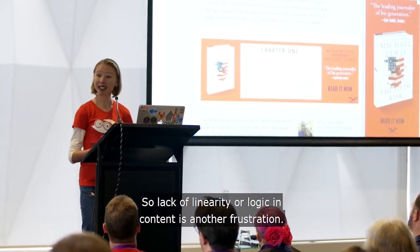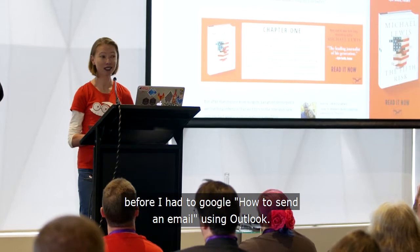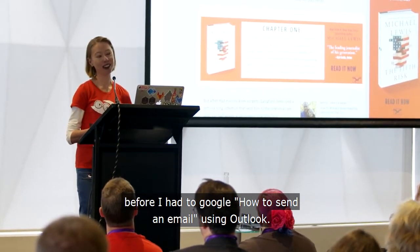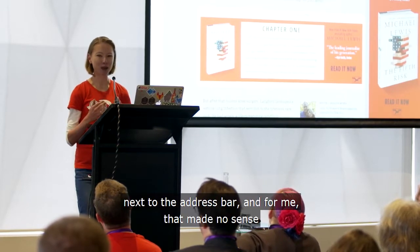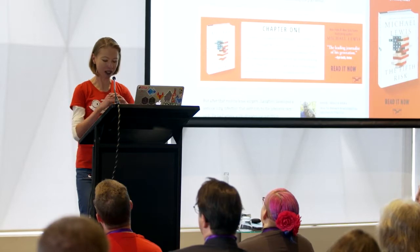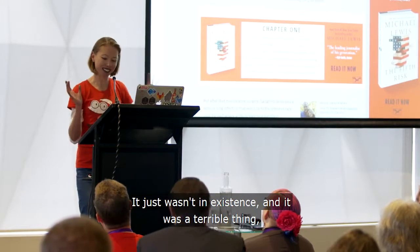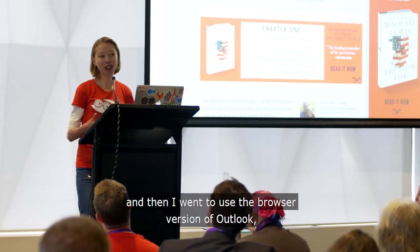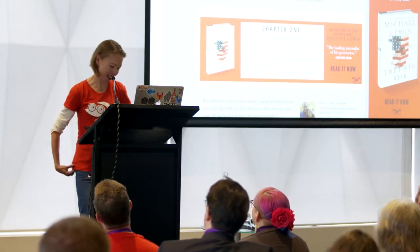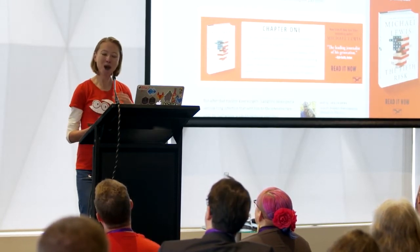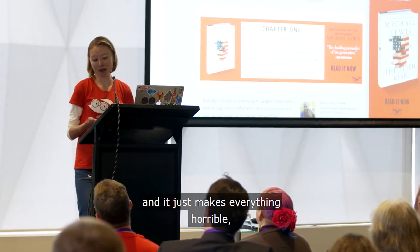So lack of linearity or logic in content is another frustration. Recently I wrote an email and I searched for the send button for five minutes before I had to Google how to send an email using Outlook. Turns out the send button was at the top of the screen next to the address bar. For me, that made no sense because the way I go about things is I put in who I'm sending the email to, I write the email, and then I send it. So I couldn't see it — it just wasn't in existence for me. And then I went to use the browser version of Outlook and the position of the send button had changed again. For people with cognitive disability, multiple bad user experiences one after the other will stack up. It increases stress, it worsens cognition, and it just makes everything horrible.